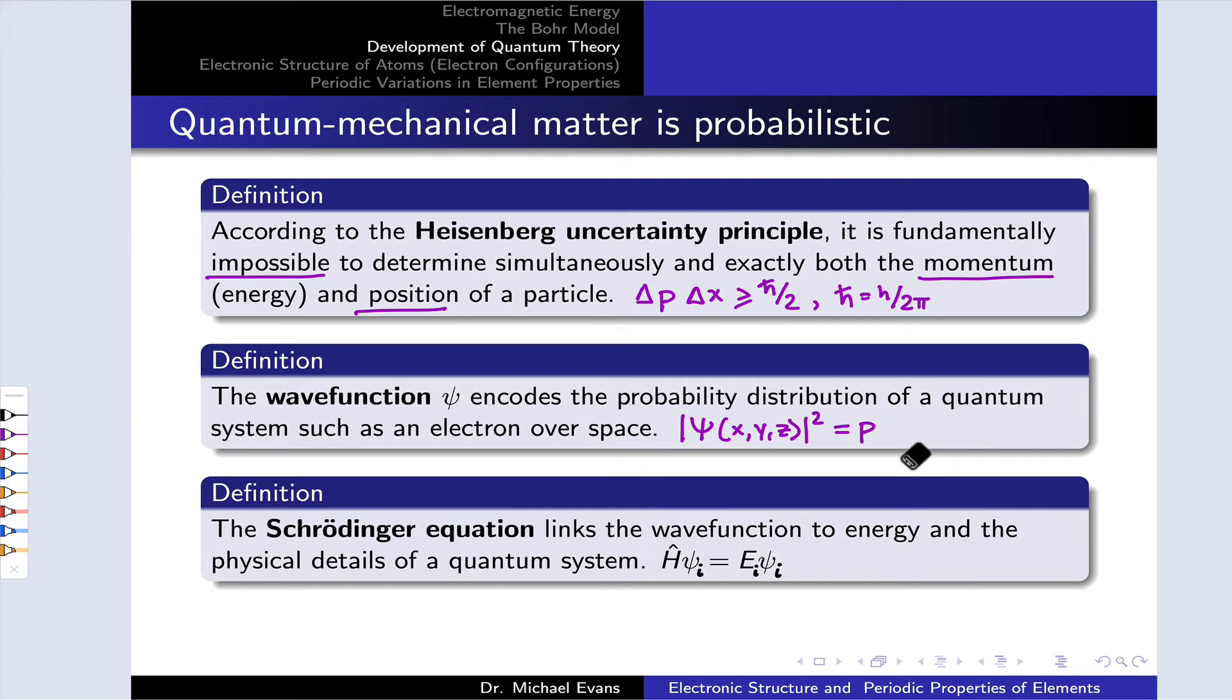The wave function itself can have positive and negative values, and we'll explore that as we look at the shapes of wave functions for electrons within atoms. But the square of that, which is a real positive number, is equal to a probability, the probability of finding an electron at the point x, y, z.